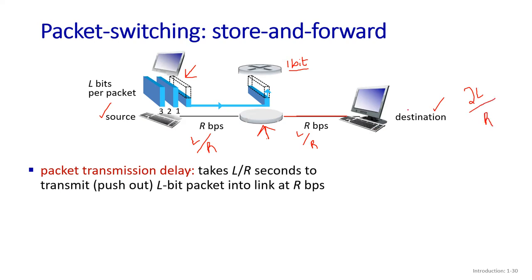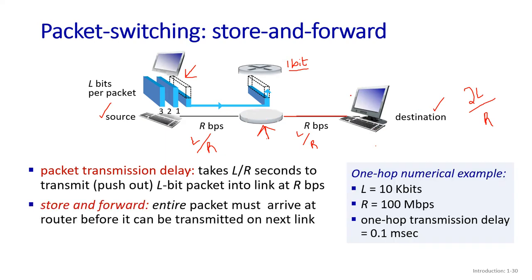Store-and-forward means the router first stores the complete packet, then transmits it onto the link. The entire packet must arrive at the router before it can be transmitted on the next link. For a numerical example: with packet length 10 Kbits and link transmission rate 100 MB/s, the delay L/R equals 0.1 ms.